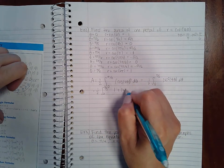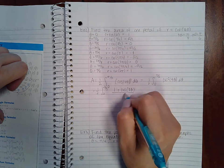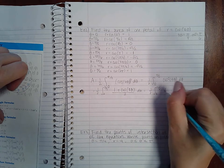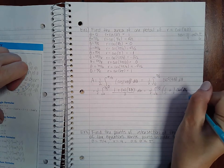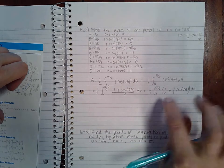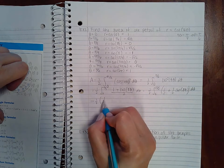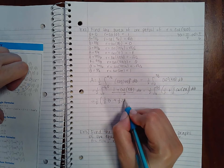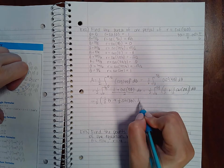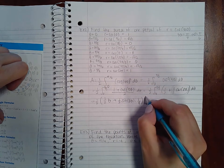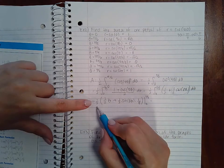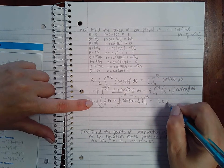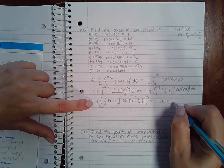We'll use the power reducing formula, so 1 plus cosine of 8 theta over 2. Split that up into 1 half and 1 half cosine of 8 theta. Here we can just get 1 half theta. Here we have to use u substitution, so we get 1 half sine of 8 theta divided by 8. If I distribute back my 1 half and kind of combine these two together, I get 1 over 4 theta plus 1 over 4 times 1 over 8 is 1 over 32.